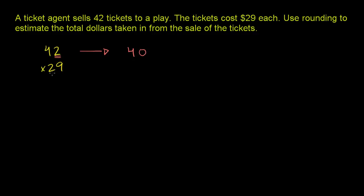29, if we round to the nearest 10: 9 in the ones place is greater than or equal to 5, so we round up. The nearest 10 is 30. Another way to think about it: 42 is pretty close to 40, and 29 is pretty close to 30. Those are literally the nearest multiples of 10.